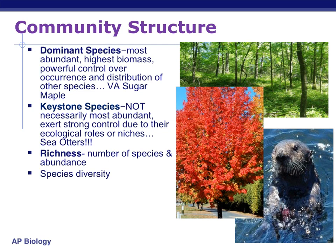The next one is going to be a keystone species. A keystone species, while it may not be the most abundant, still exerts really strong control because of its ecological role or niche. A good example would be sea otters; another would be prairie dogs. They're normally smaller animals, but if you removed them, it would completely break down that community.